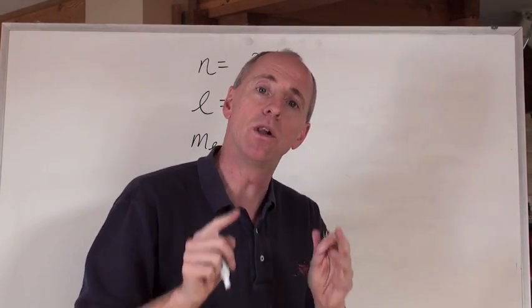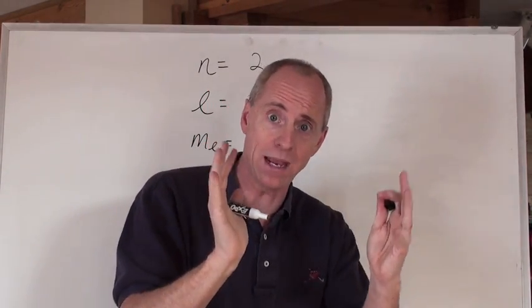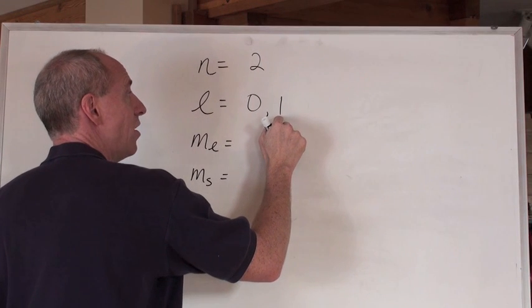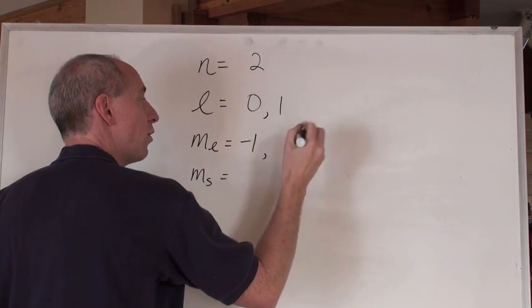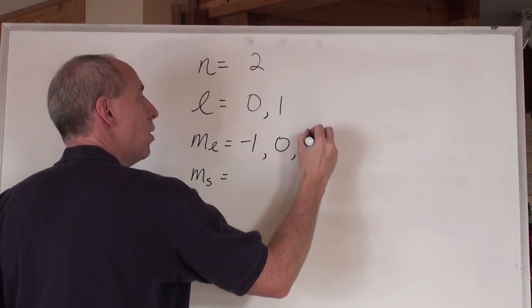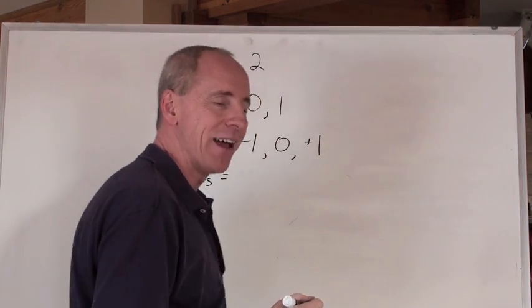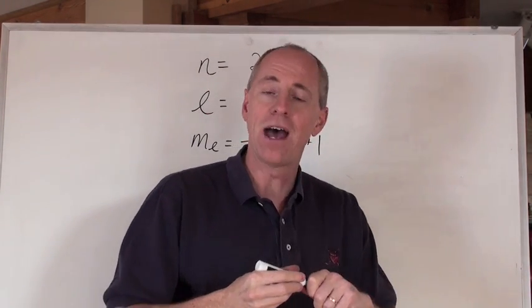That ML can equal and be in a domain that starts at the negative value of this, negative one, goes through zero and then all the way up to positive one. That's the domain of that ML.